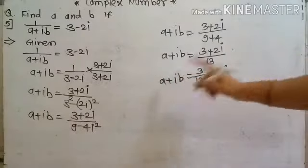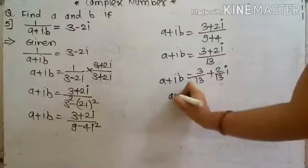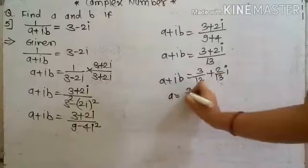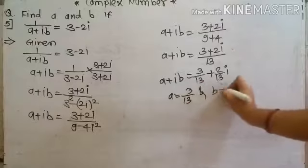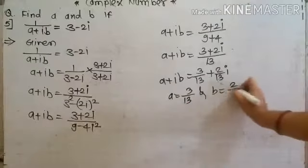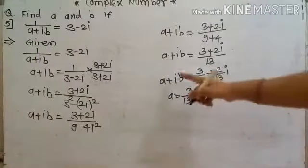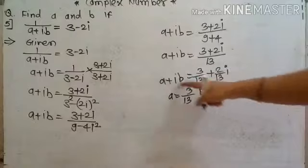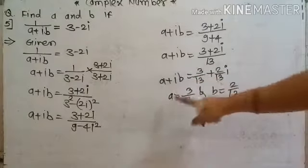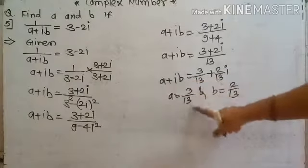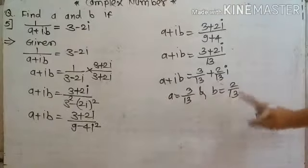After comparing real and imaginary parts, we get A equal to 3 upon 13 and B equal to 2 upon 13. By equality of complex numbers, real is equal to real and imaginary is equal to imaginary, so A is 3 upon 13 and B is 2 upon 13.